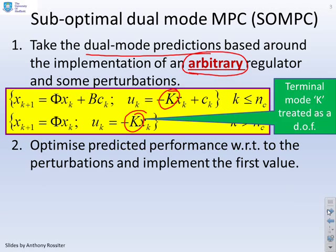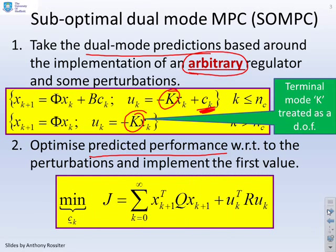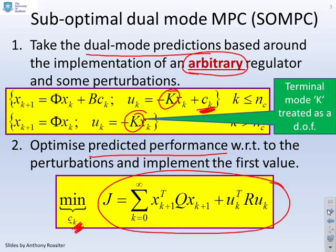What we want to do next is optimize predicted performance with respect to the perturbations, so that's these ck terms, and implement the first value. Exactly as before, we're trying to minimize a performance index over an infinite horizon with respect to these perturbations. But the only thing we've changed compared to OMPC is we've got a slightly different k.